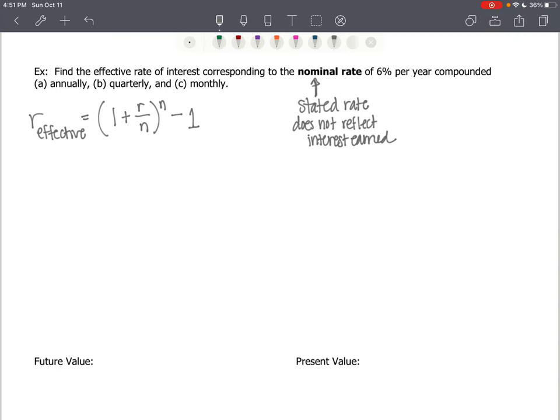If the stated rate is 6% per year, what would the effective rate be? Well, annually, it should be the same, 6% per year. Let's check it out.